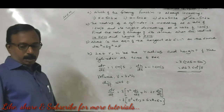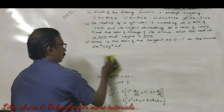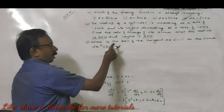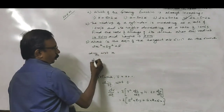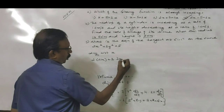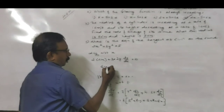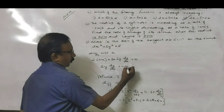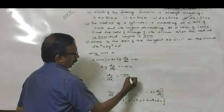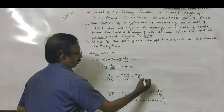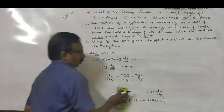Now, one more question: find the equation of the tangent at (1, 1) of the curve 2x squared plus 3y squared equals 1. This is an implicit function, so differentiating with respect to x: 2 into 2x plus 3 into 2y into dy/dx equals 0. So 6y dy/dx equals minus 4x, giving dy/dx equals minus 4x divided by 6y, which is minus 2x divided by 3y.